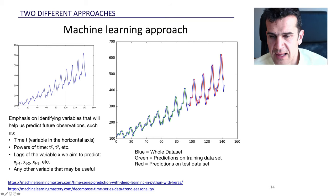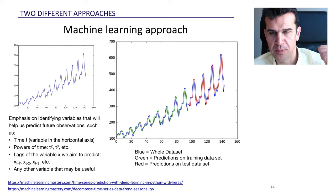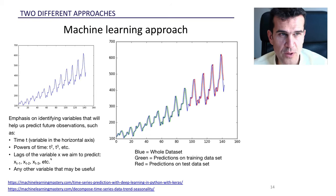So x at t minus one would be the variable at the previous time period. X of t minus two, which would be the x with lag two or with two lags, would be the value of the variable we aim to predict two periods before, and so on and so forth. Then in machine learning, we could include pretty much any other variable that we deem useful to predict the variable that we want to predict.